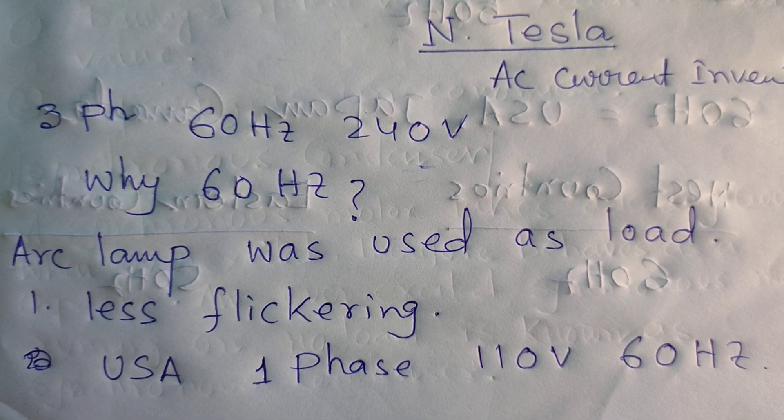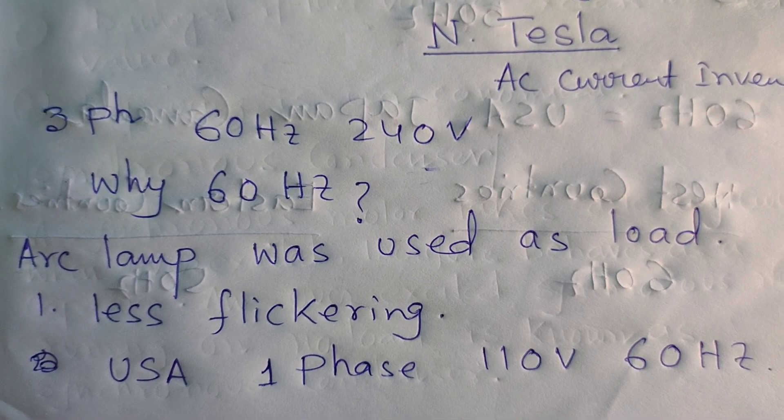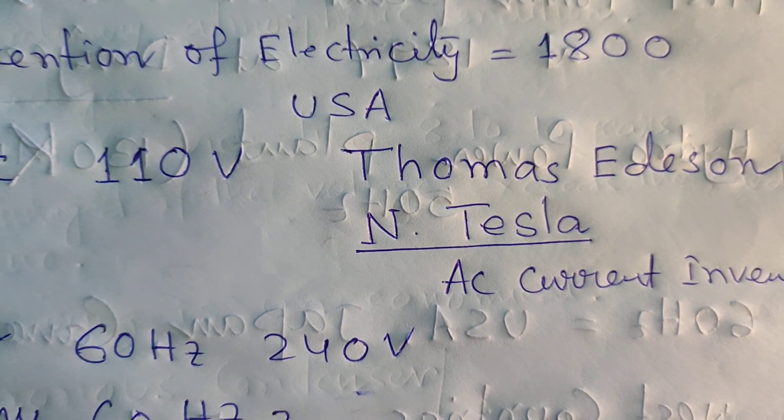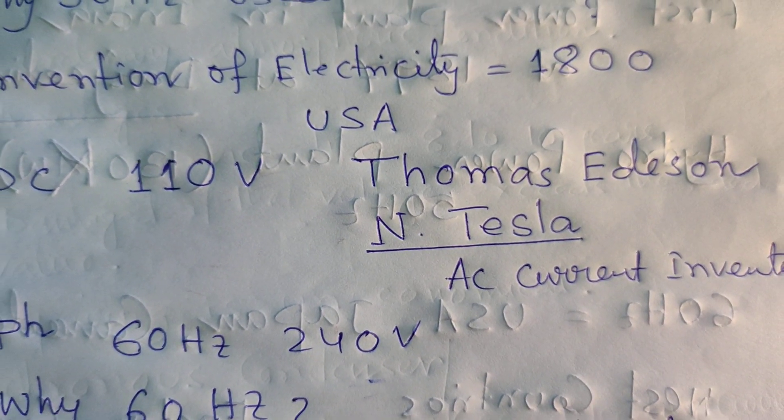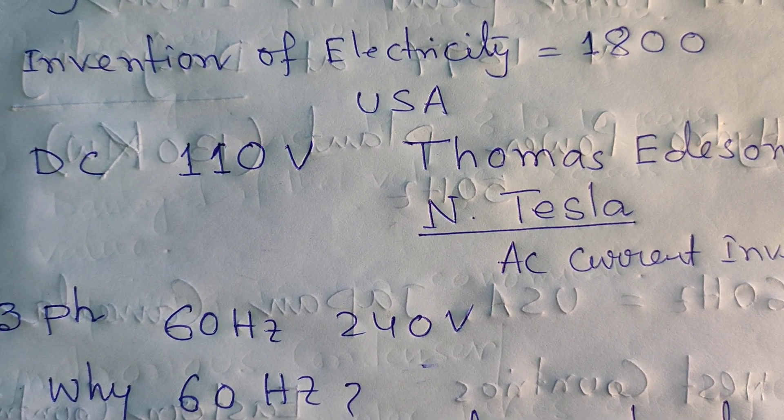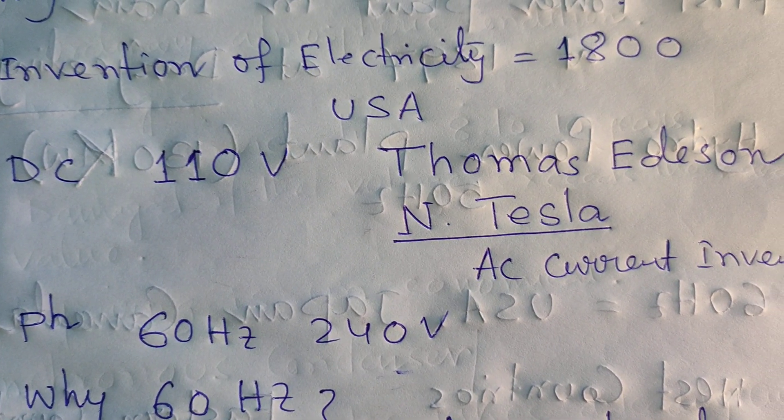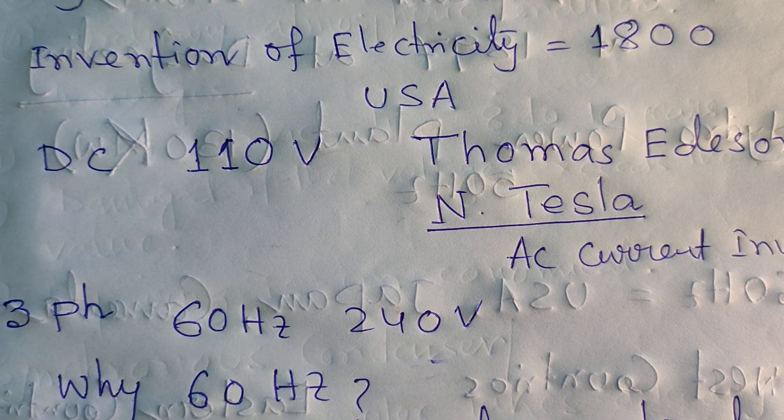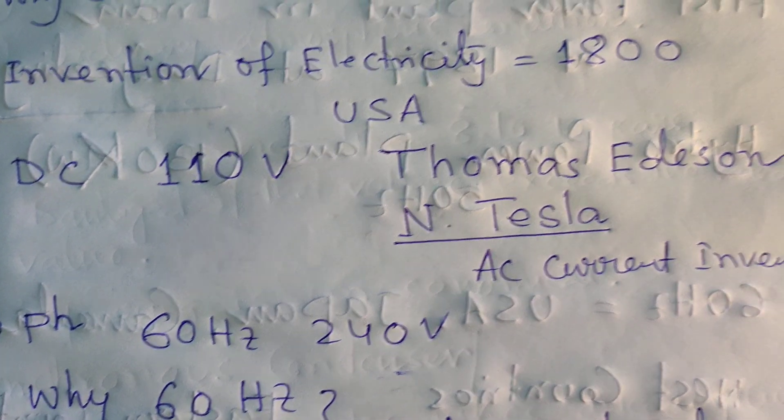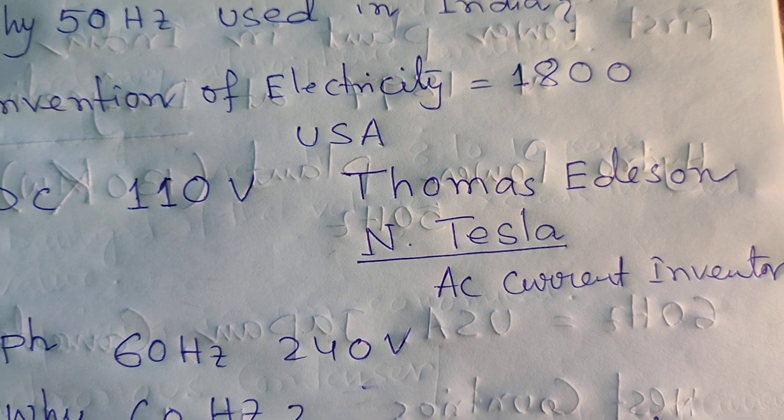After invention of DC and AC, both power electric wars had started between Thomas Edison and Nikola Tesla. As AC current is far better than DC current, the USA government recommended use of AC current instead of DC current for public use.